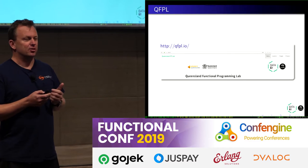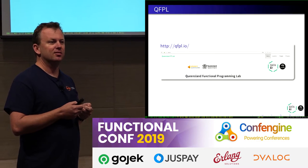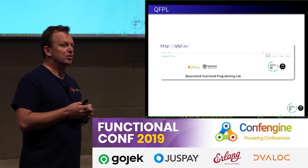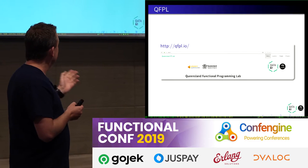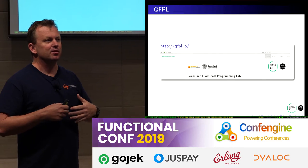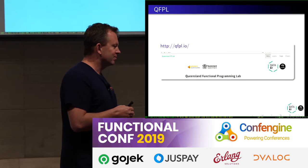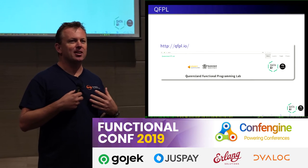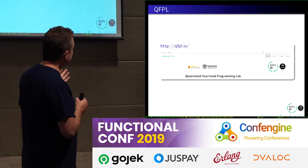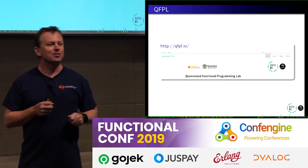I work for the Queensland Functional Programming Lab, located in the state of Queensland, Australia. It is funded by the CSIRO, the Federal Government Commonwealth Research Organisation, and Advanced Queensland, the Queensland State Government. We're a team of about 8 or 9 Haskell programmers. The Australian Government wants us to write Haskell — that's what I conclude from this. Maybe we need to talk to the Indian Government.